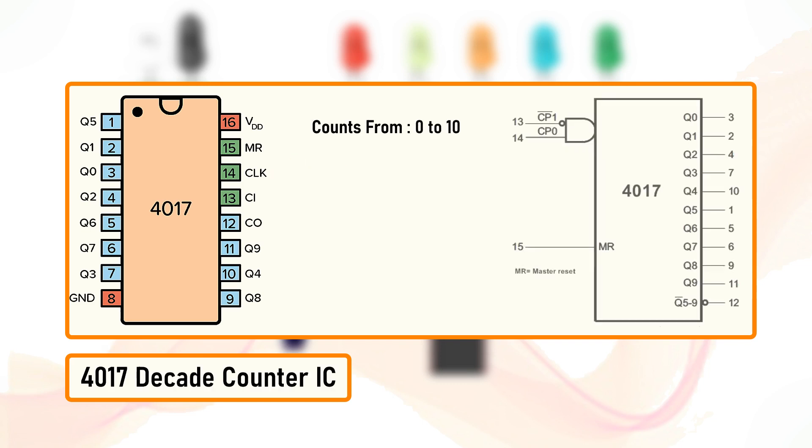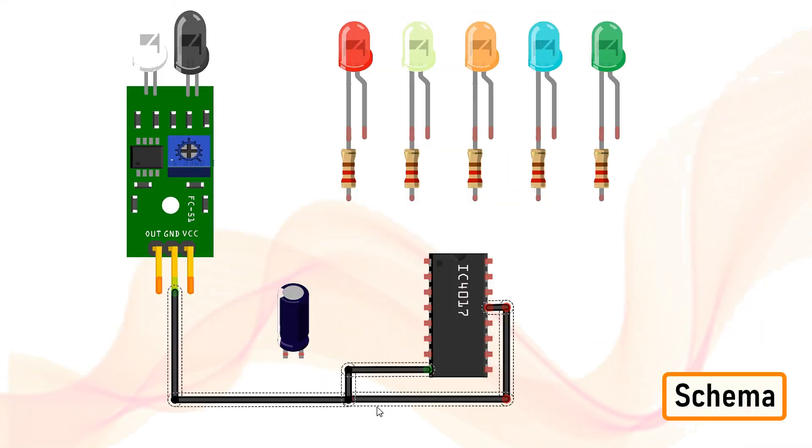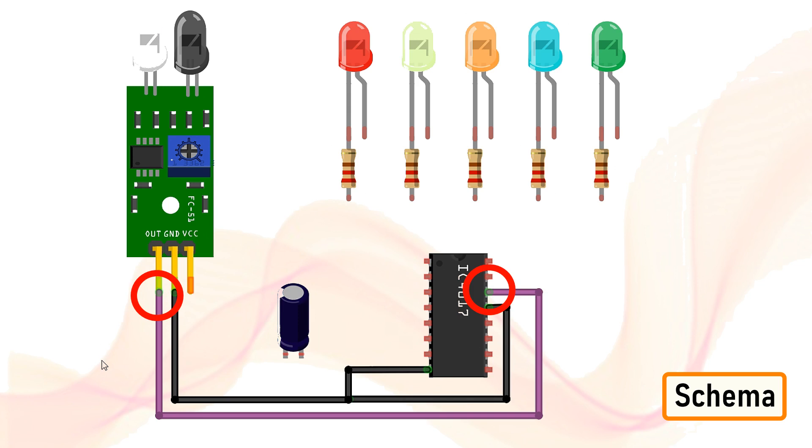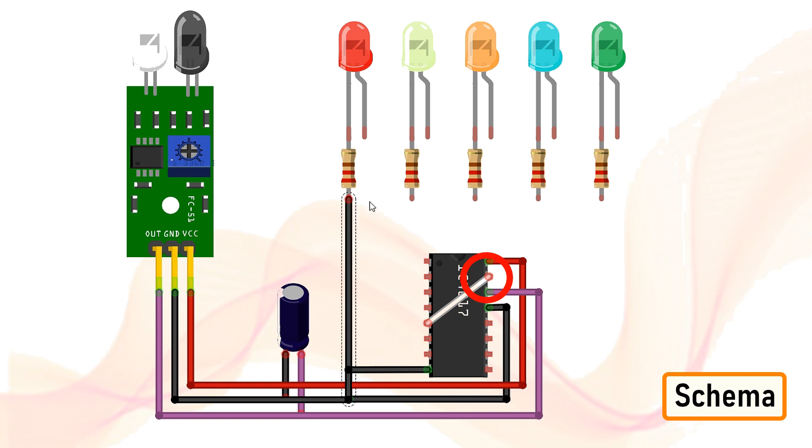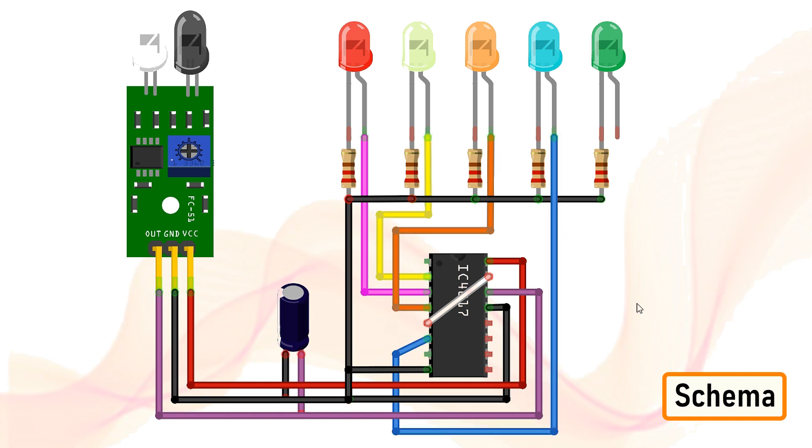4017 is a decade counter. It can count from 0 to 10. When a clock signal is received on pin number 14, the output turns to high one by one in sequence. The signal from the IR sensor clocks the 4017 decade counter. Whenever a pulse is received at the clock input of the IC, the counter increments the count and activates the corresponding output pin. So the sixth output from pin number 5 will be given to the reset pin, pin number 15. Sending a high signal to pin number 15 will reset the counter and it will skip counting the rest of the numbers and will start from the beginning.